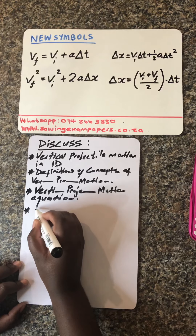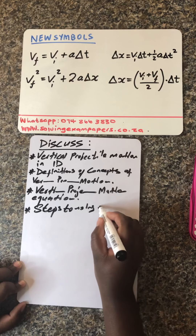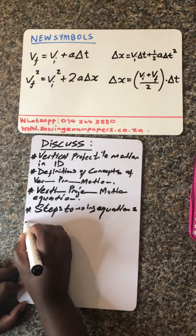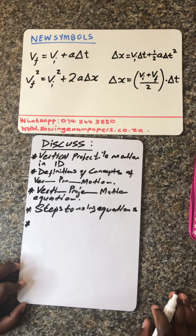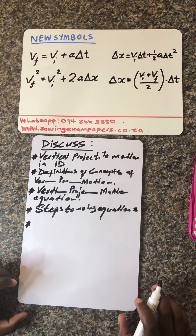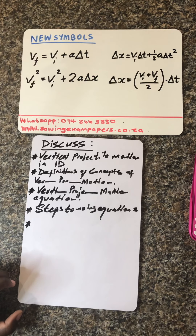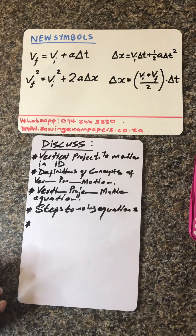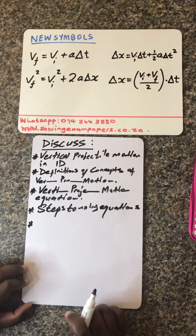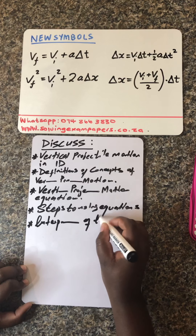Ladies and gentlemen, I'm going to take you through the steps to using these equations of vertical projectile motion. Once we are done explaining these equations and the steps for using them, we'll do the interpretation of the graphs. If you're in Grade 12, at this point I assume you're aware that we've got some graphs which represent different problems we'll be solving — so interpretation of the graphs is very important.